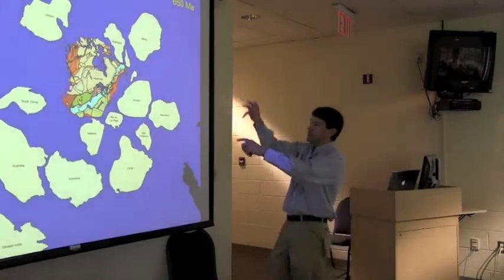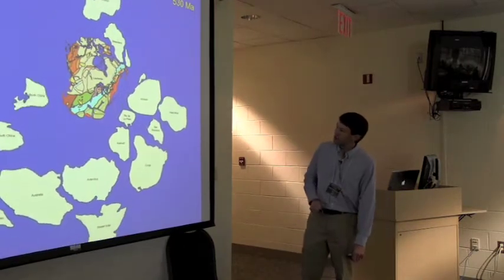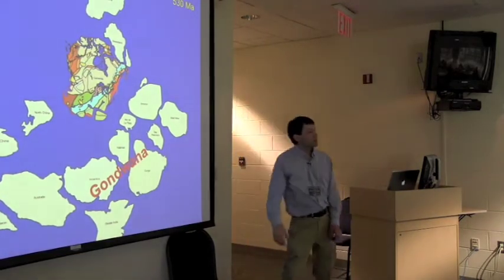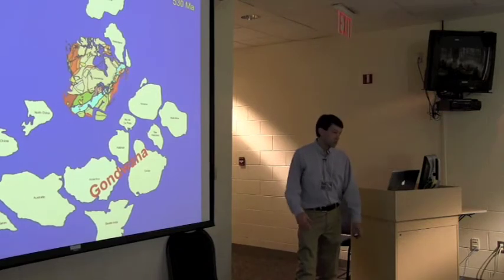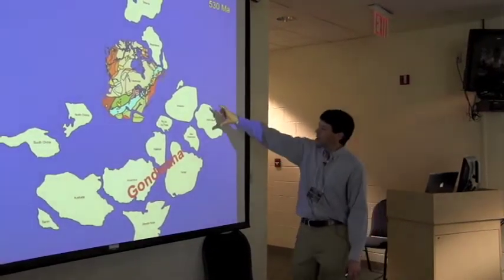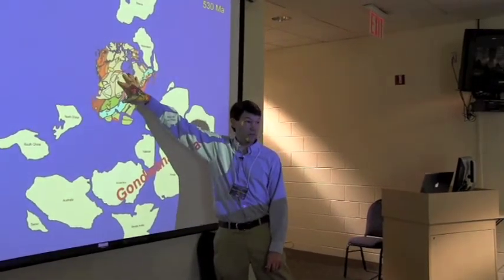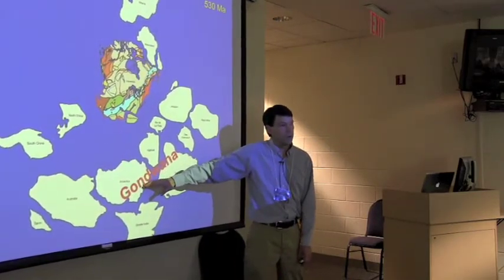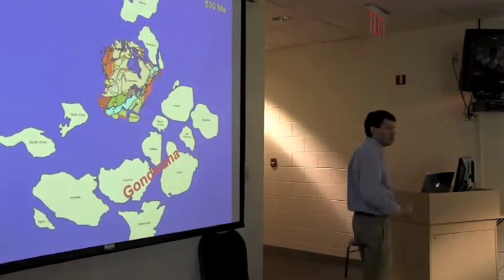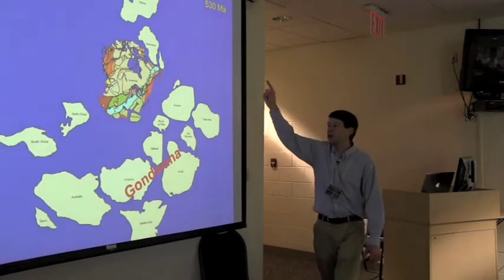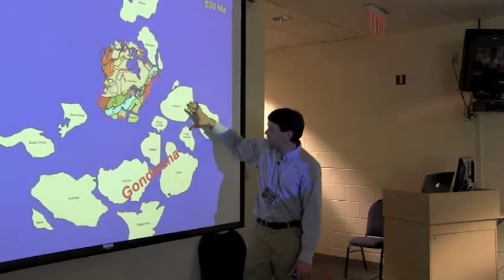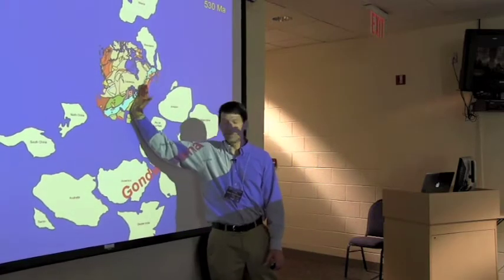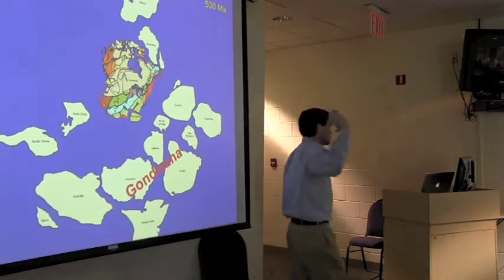And it breaks up in different phases. Things move around. There's some funky stuff going on up there. That's because this is a 2D projection of a 3D globe. But anyway. And at about 530 million years ago, the end of the Proterozoic, beginning of the Phanerozoic eon, we have Laurentia off by itself and much of the rest of the continents in a new supercontinent called Gondwana that did not include Laurentia.